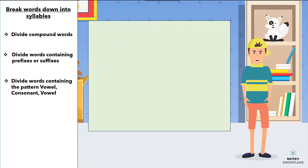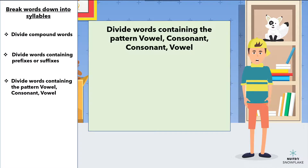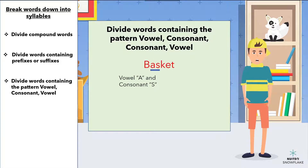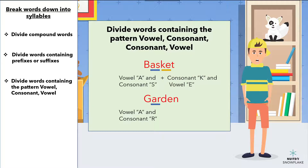Sometimes words follow another pattern: vowel, consonant, consonant, vowel. In that case, divide the word after the first consonant. For instance, 'basket' would be divided as 'bas-ket.' 'Garden' would be divided as 'gar-den.'